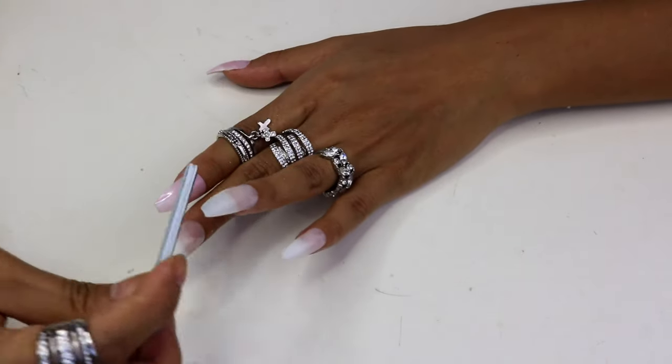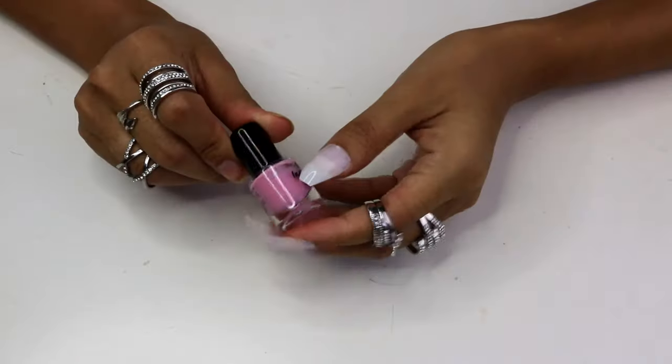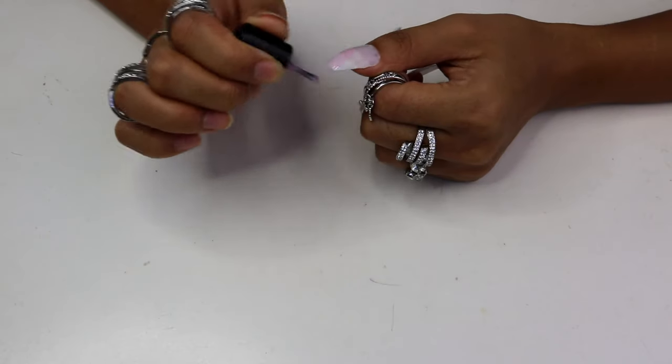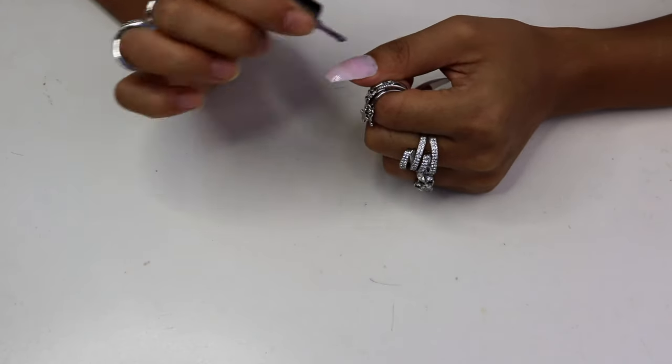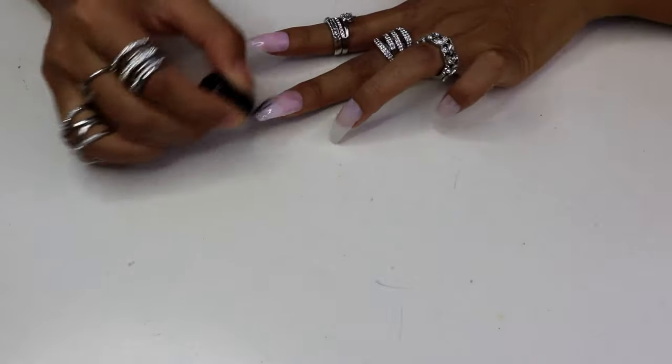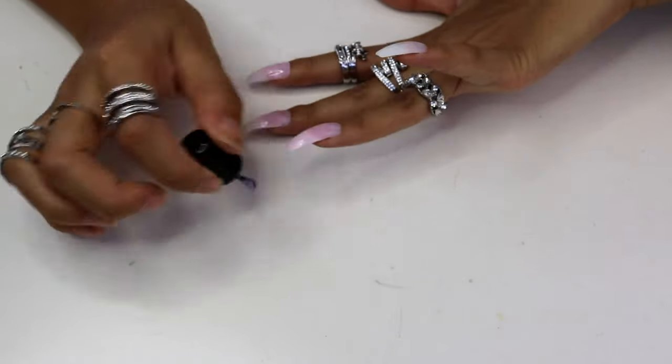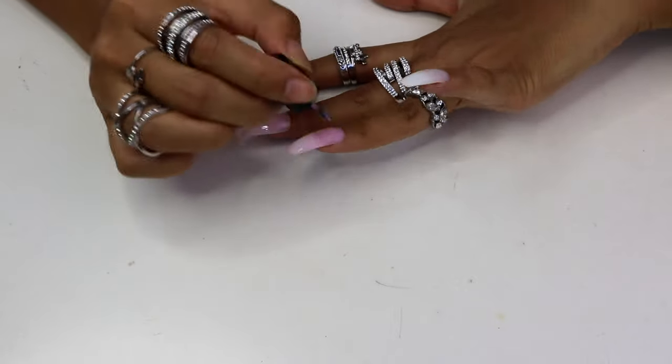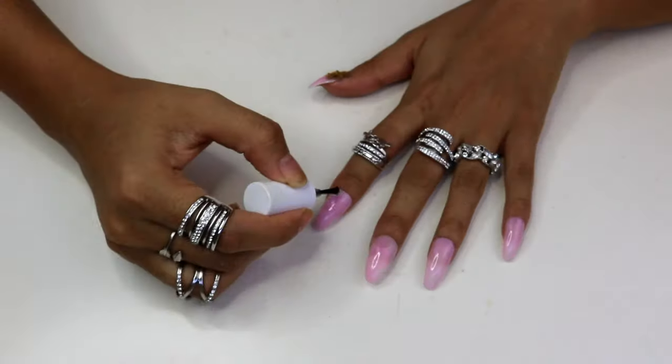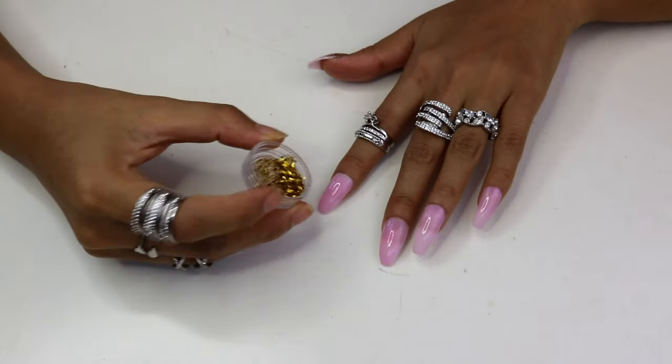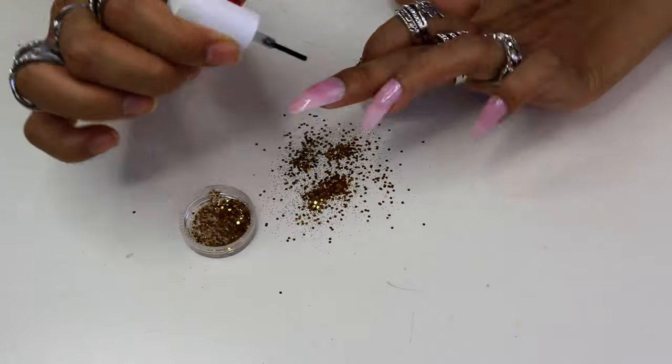Now time to check out your favorite nail polish and paint your nails. I'm using a baby pink color for my nails and going to paint them all. Now if you like your nails to be this simple, go ahead, use a top coat and you're literally done.